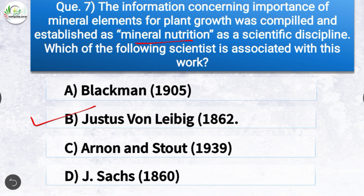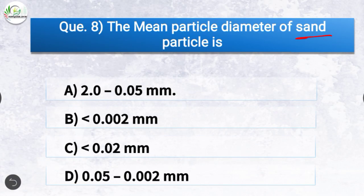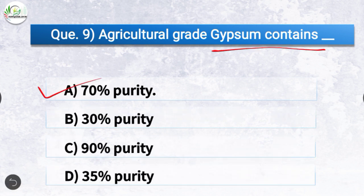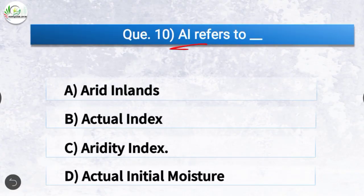Question number eight: the mean particle diameter of sand particle is? The correct answer is option A, 2.0 to 0.05 millimeter. Question number nine: agricultural grade gypsum contains? The correct answer is option A, 70 percent purity. Question number ten: AI refers to? The correct answer is option C, aridity index. An aridity index is a numerical indicator of the degree of dryness of the climate at a given location.